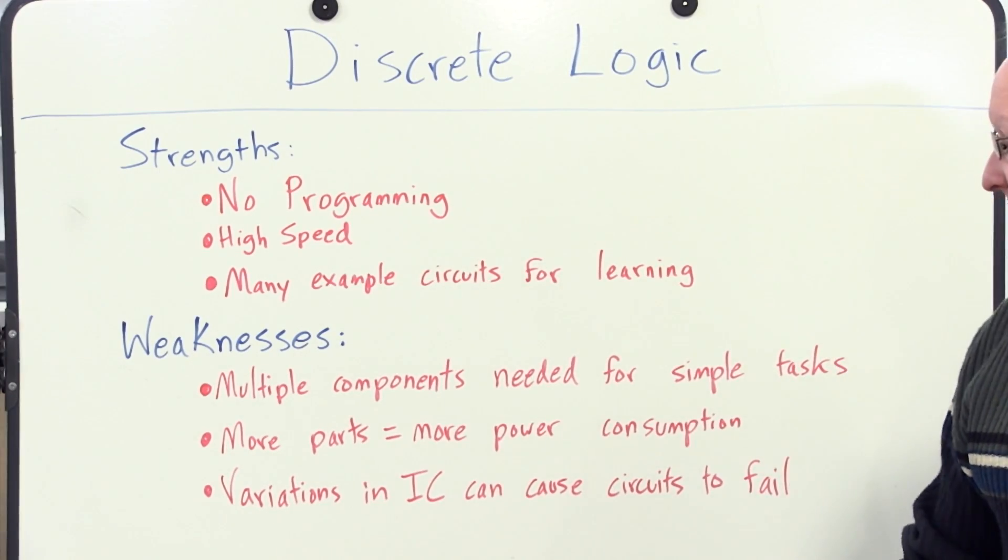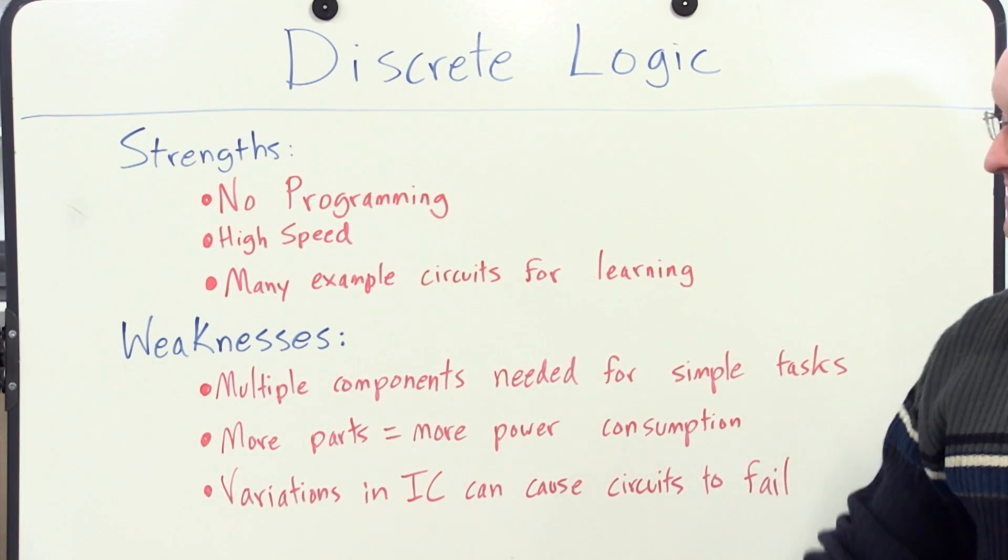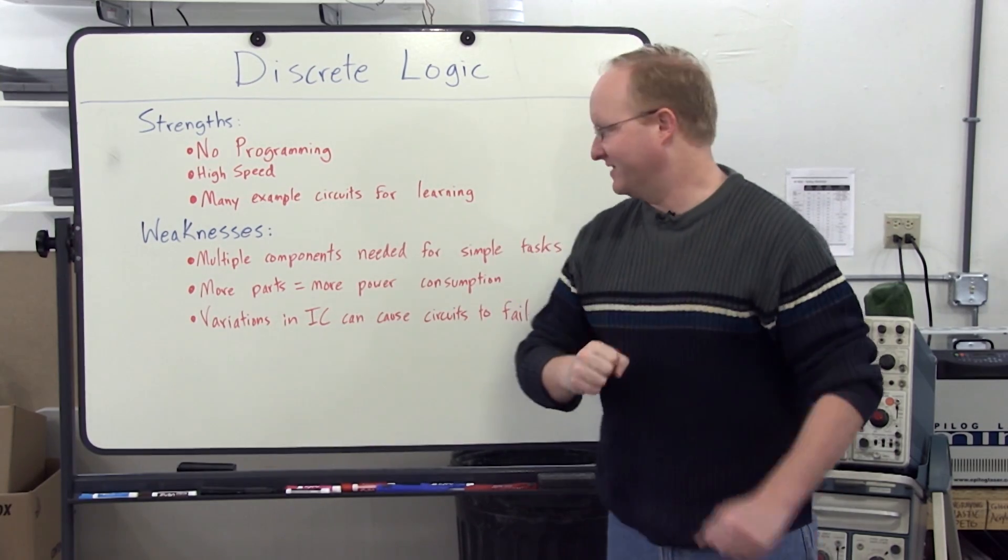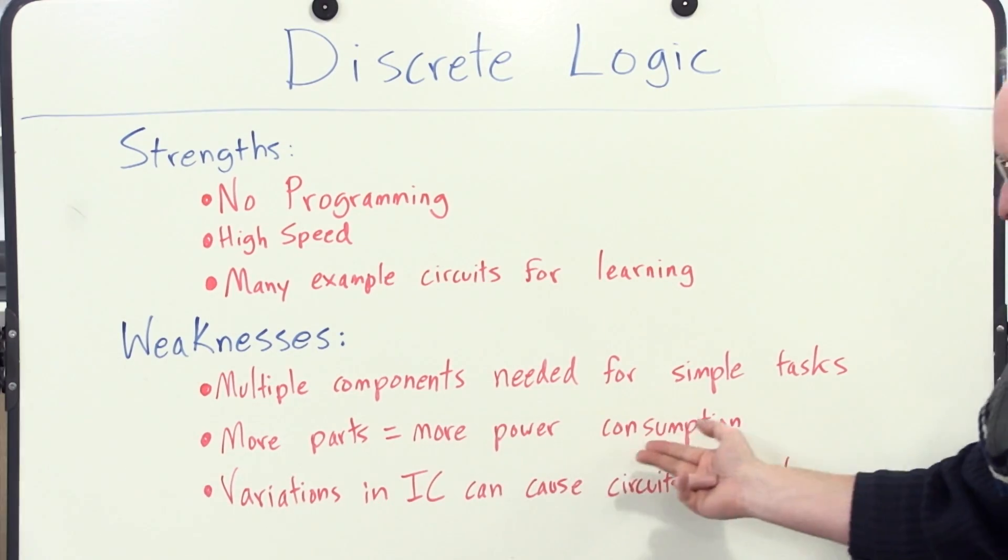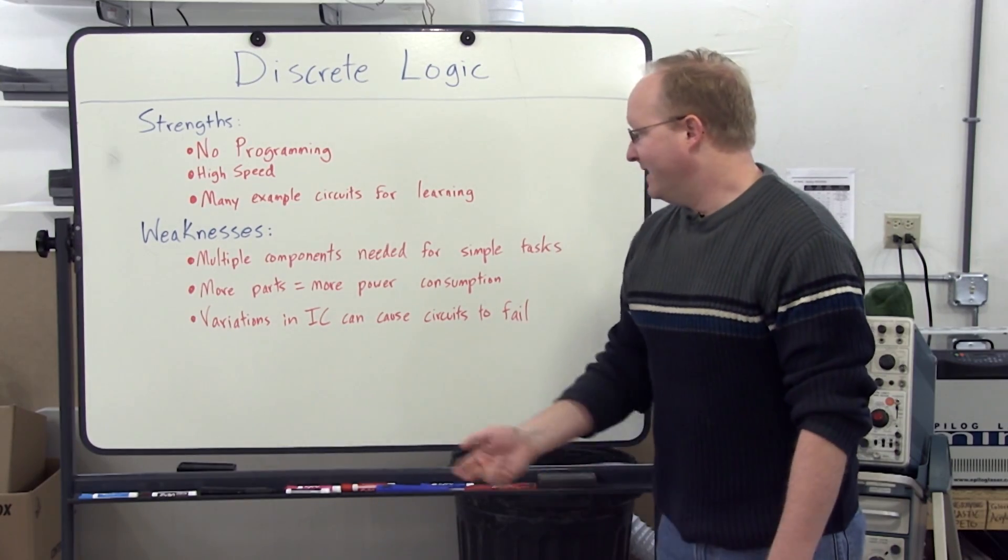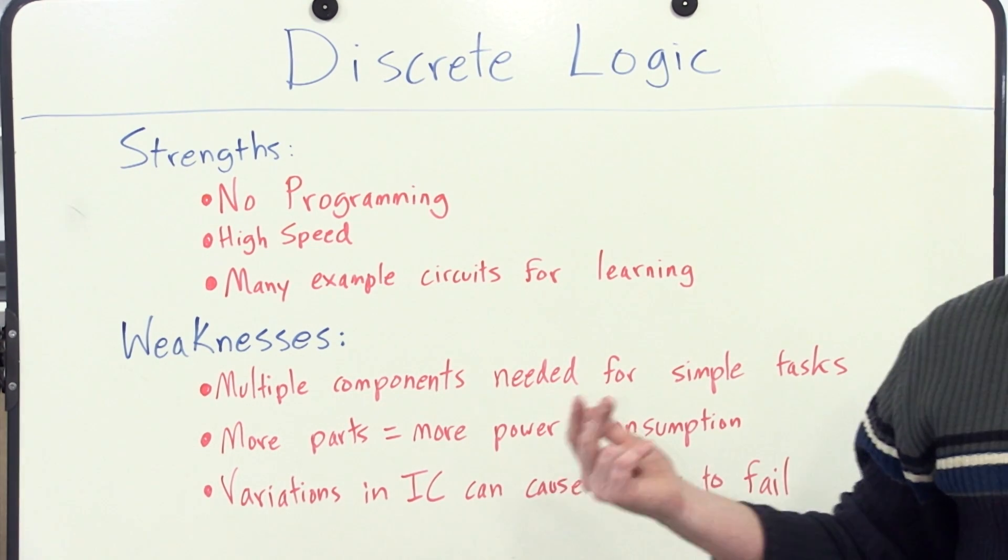Weaknesses of discrete logic, multiple components are needed for even the simplest tasks, so yes, you can find example circuits online, but it's going to take you a while to wire them all together. More parts also means more power consumption.